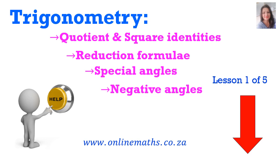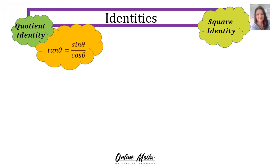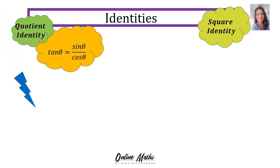Let's start with the maths. Let's start with the identities. The first identity, we call it the quotient identity. That is: tan theta is equal to sin theta over cos theta. And please note, 1 over tan theta is cos theta over sin theta.